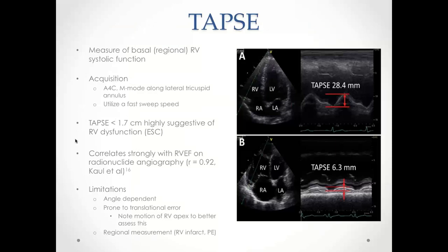TAPSE is obtained in apical 4-chamber view with M-mode along the lateral tricuspid annulus, ideally using a fast sweep speed. It has been validated in multiple studies and is in the guidelines — a value less than 1.7 centimeters is highly suggestive of RV dysfunction, with good correlation with radionuclide angiography for RVEF estimation. Important limitations include: it is very angle-dependent, and it is prone to translational error — if LV contracts and the whole RV swings, TAPSE may appear falsely preserved; checking if the RV apex is swinging can help identify this artifact.